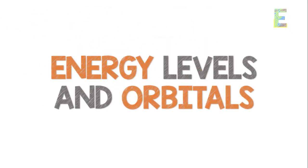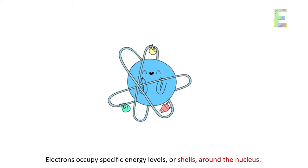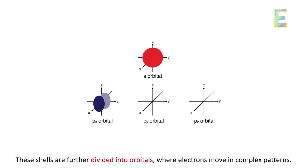Energy levels and orbitals. Electrons occupy specific energy levels, or shells, around the nucleus. These shells are further divided into orbitals, where electrons move in complex patterns.